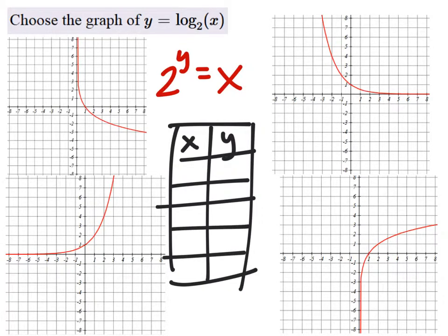The difference, though, is now we're choosing values of y to find x. So we're going to choose values of y like this, and since it's 2 to the power of something, it's kind of going to mimic the last problem. We've got 1, 2, and 4, 1 half and 1 fourth.